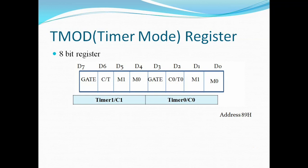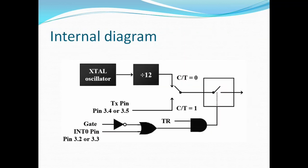The first bit is the Gate bit — that is D7 for timer 1 and D3 for timer 0. Let us understand what is the importance of this Gate bit by looking at the internal diagram of the timer.